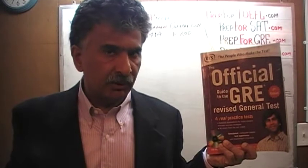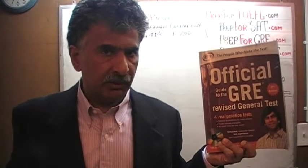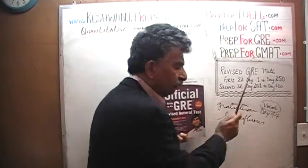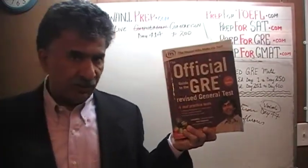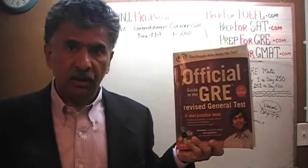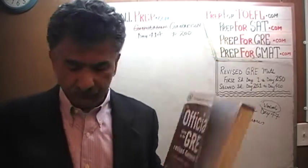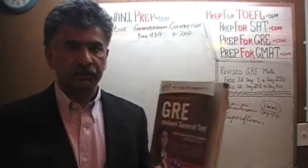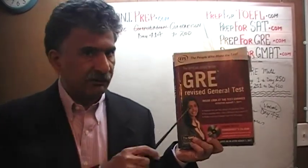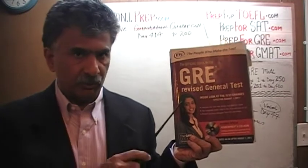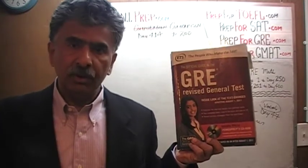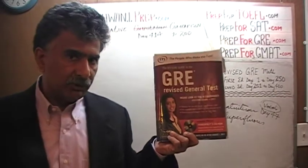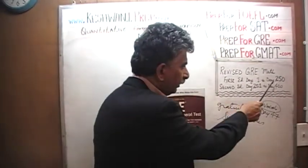If there is any math problem that gives you trouble, you can find the solutions to it from day number 251 through 400. The problems this book contains — the second edition — are almost all the same problems, in most cases on exactly the same page numbers, as those that appeared in the first edition of the Revised GRE. If you are interested in watching any of the original solutions, you will find them from day number 1 through 250.